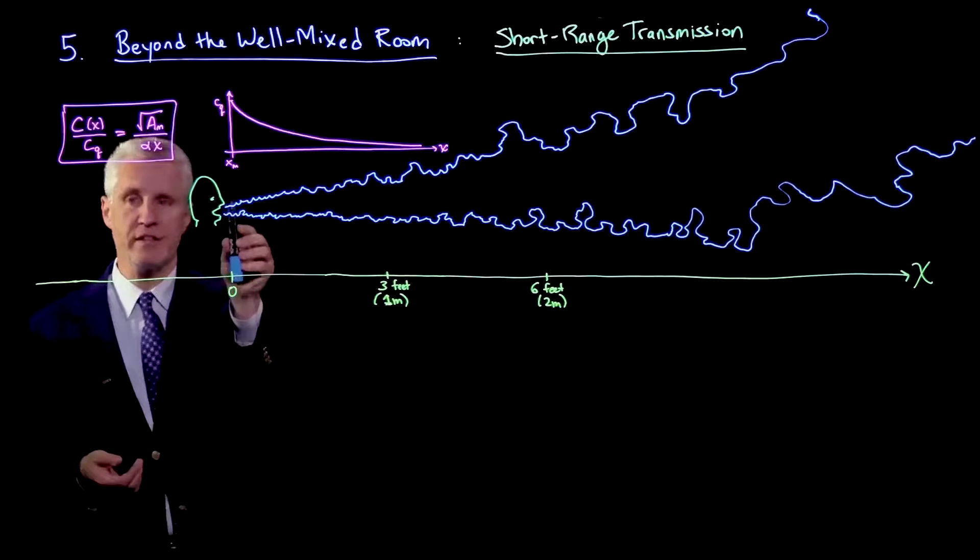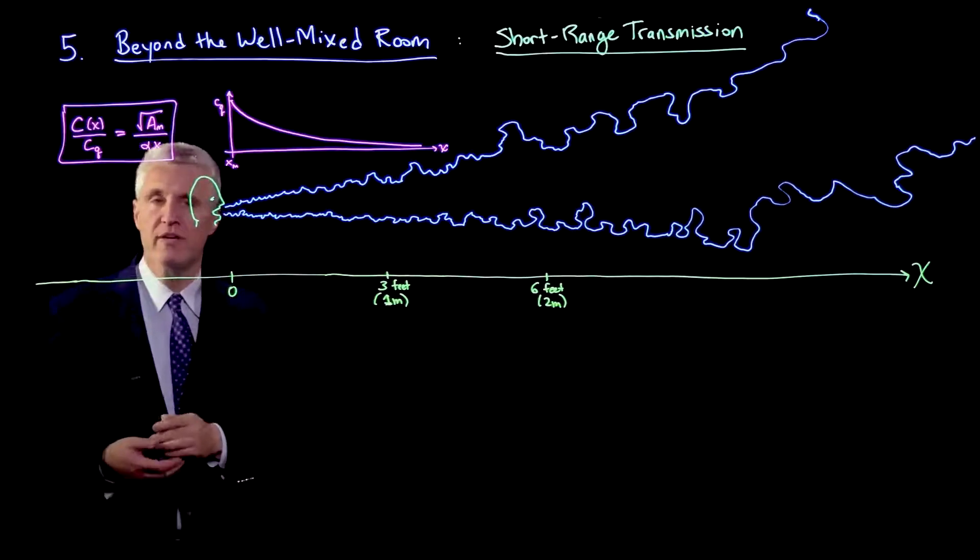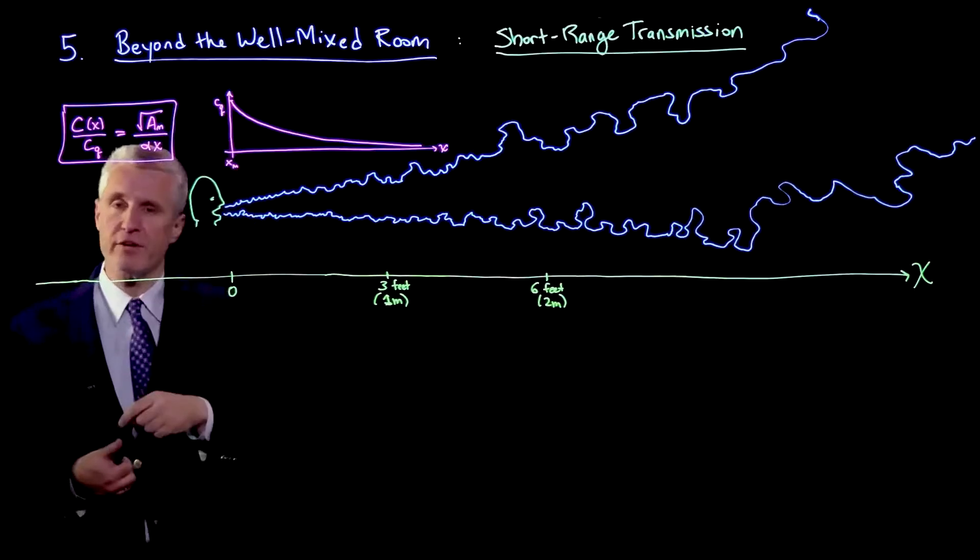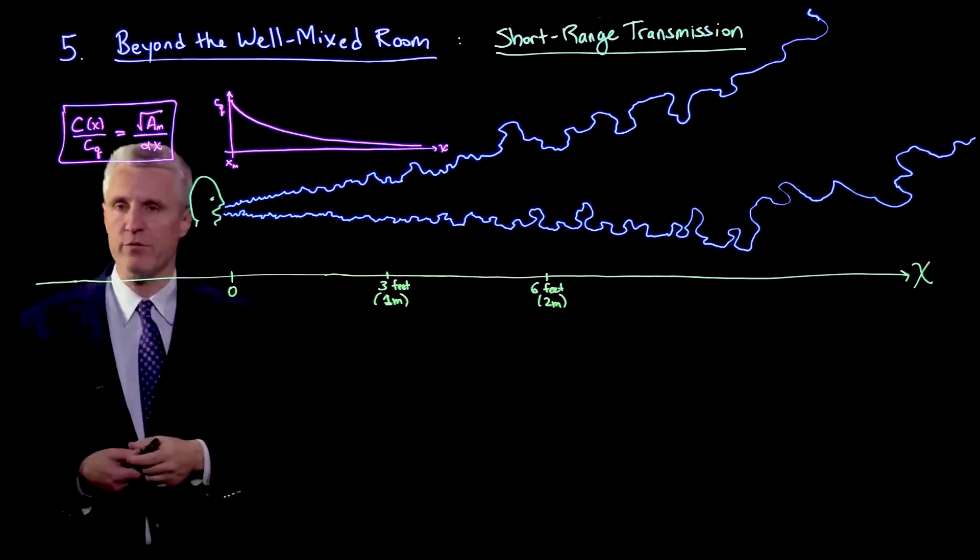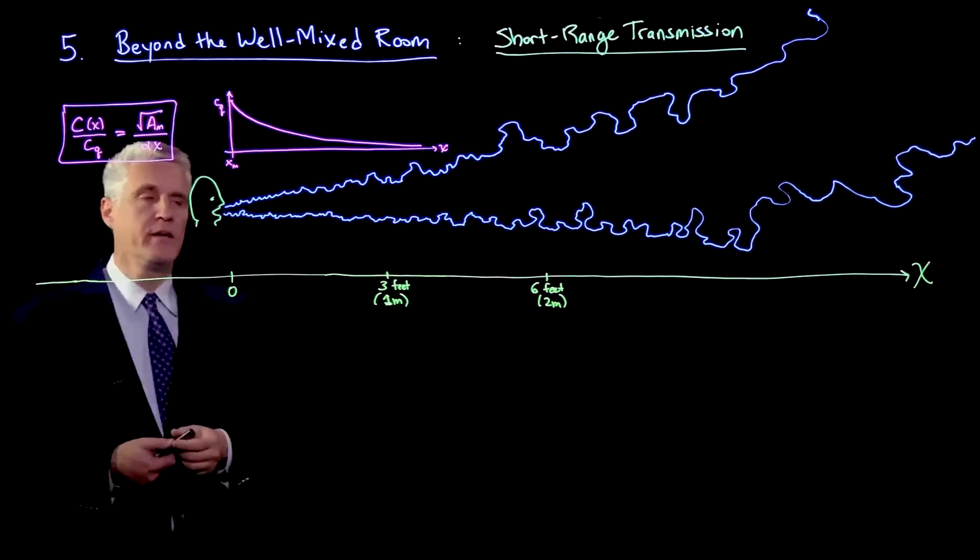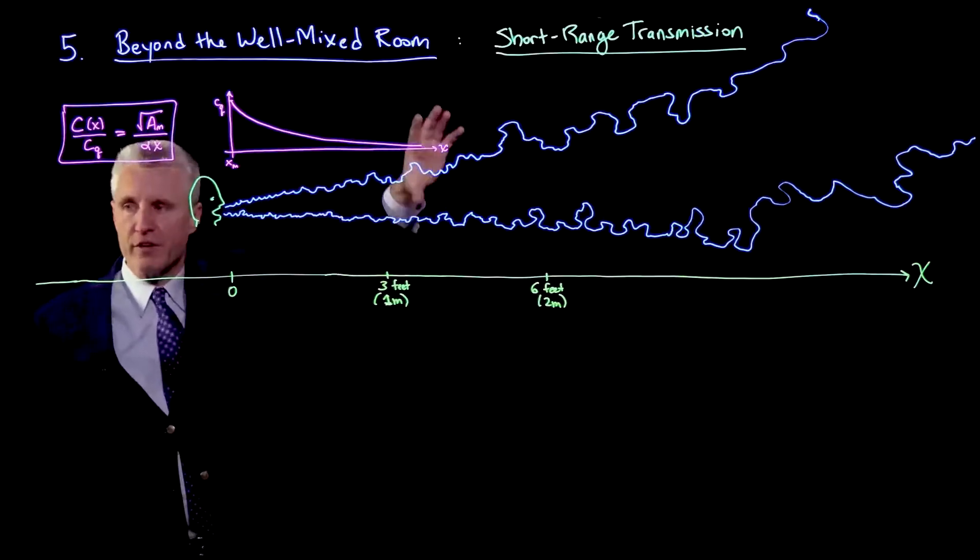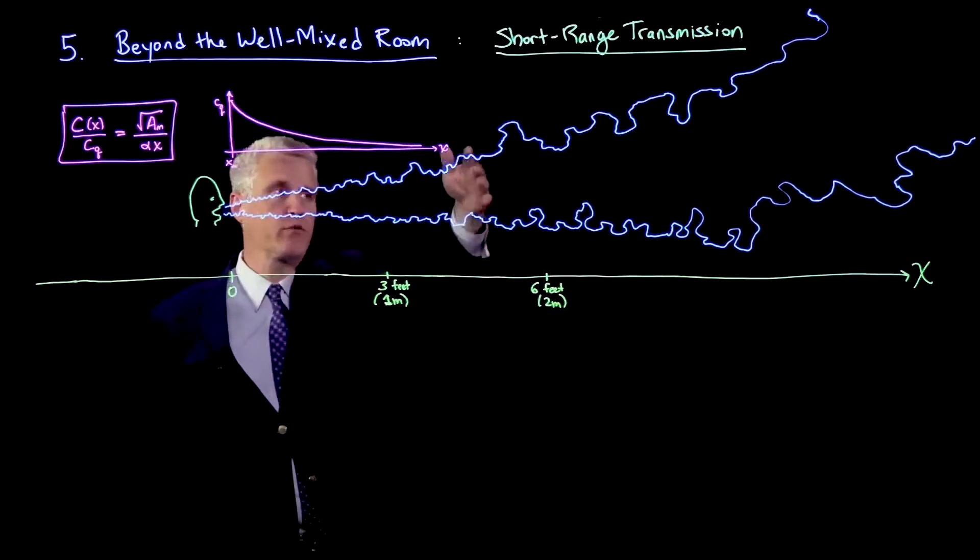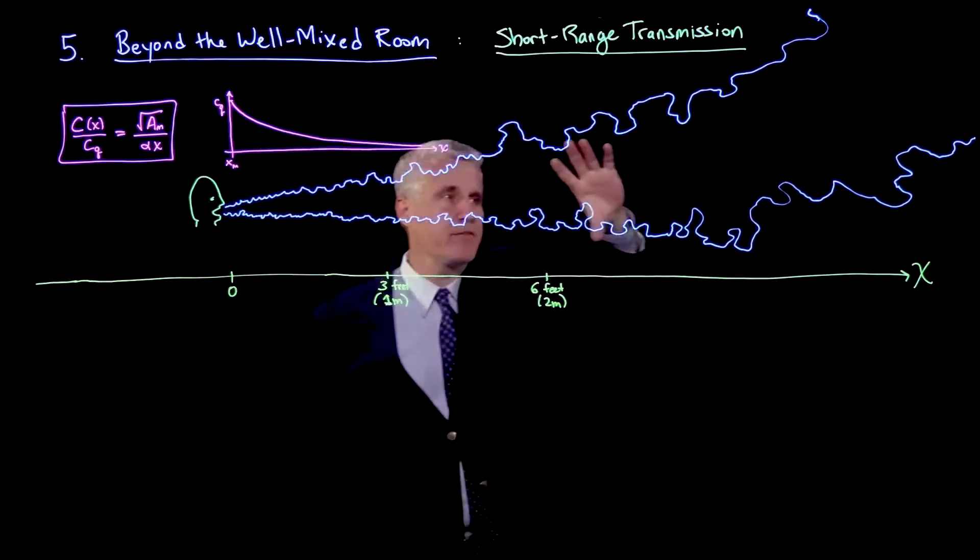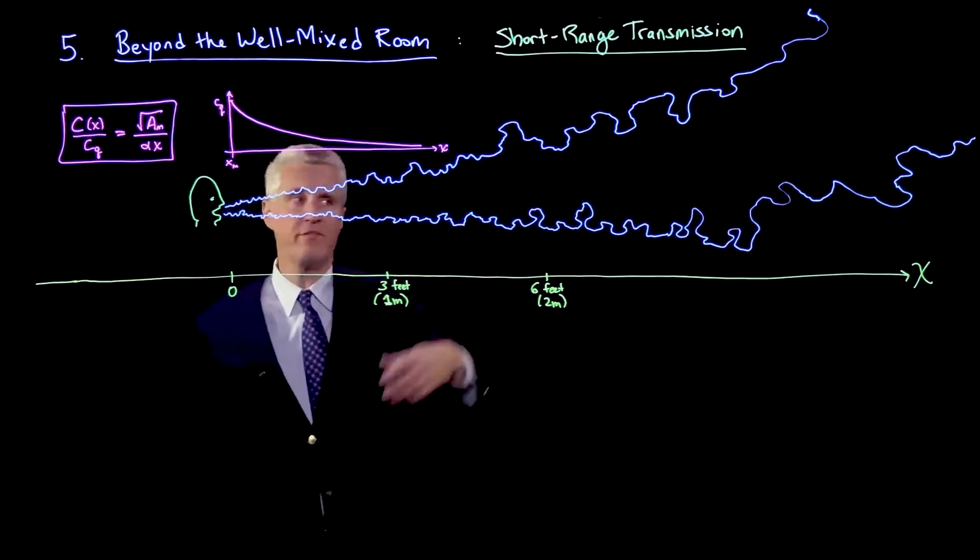Relative to that leaving the mouth CQ, this leads to a jet which grows in size and grows in fluctuations. You see more and more eddies, and it eventually might even bend due to flows in the room or thermal buoyancy effects.